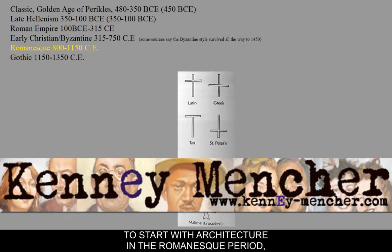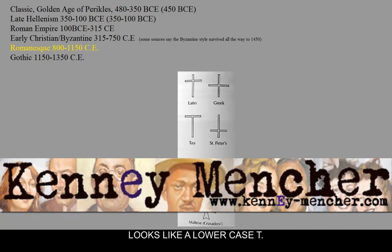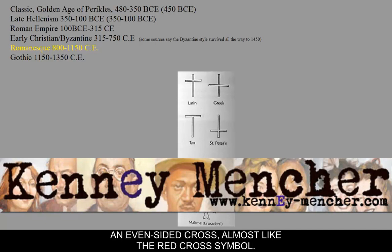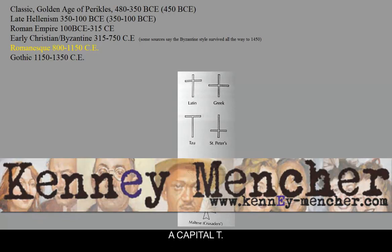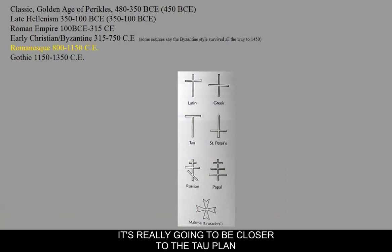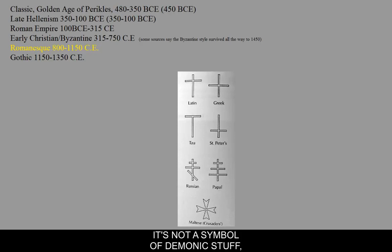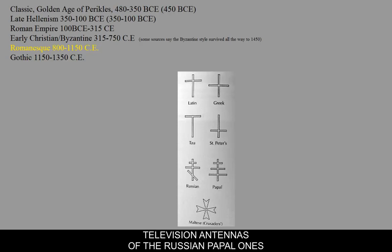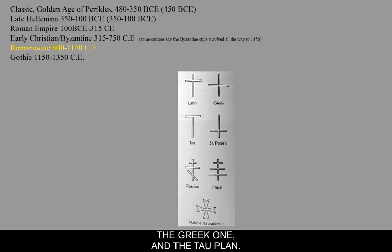In order to understand architecture in the Romanesque period, you need to know about the different cross plans. In the upper left-hand corner you can see a Latin cross, which basically looks like a lowercase t. The Greek cross is the plan we'll refer to as the central plan — basically an even-sided cross, almost like the Red Cross symbol. Then we have the tau plan, which looks like a capital T. In this period, it's really going to be closer to the tau plan or the Latin cross plan. The other crosses — St. Peter's cross — isn't a symbol of demonic things; the legend has it that Peter was crucified upside down because he wasn't worthy. The most important ones are the Latin, the Greek, and the tau plan, and those are the basic footprints of the buildings we'll be looking at.